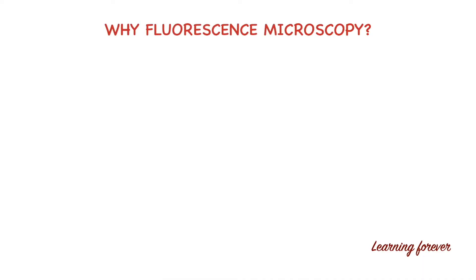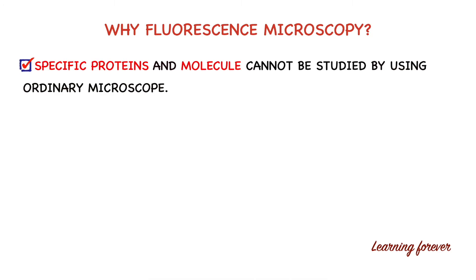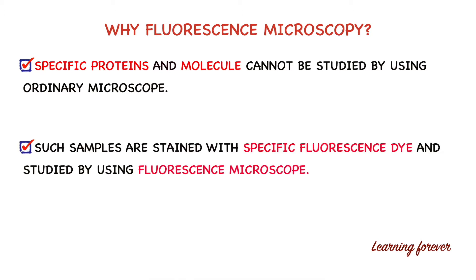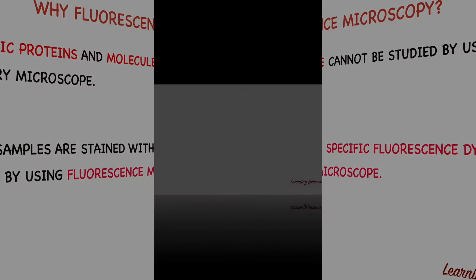Now let's see why we use fluorescence microscopy. Specific proteins cannot be studied without staining, and these proteins are not stained by ordinary staining agents. Hence, such samples are stained with a specific fluorescence dye and studied using a fluorescence microscope.